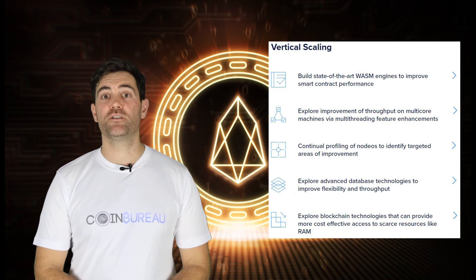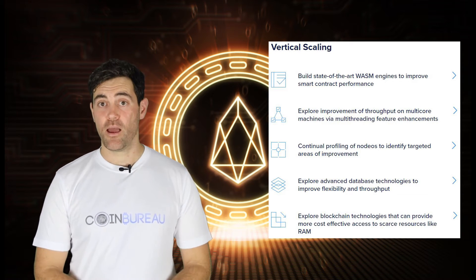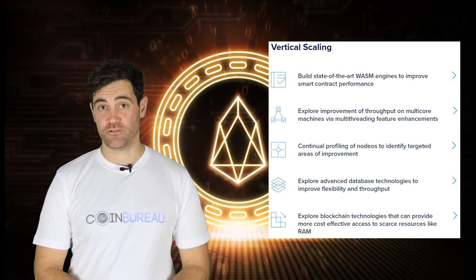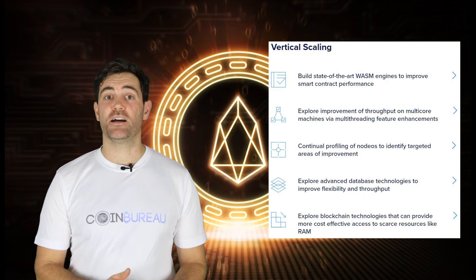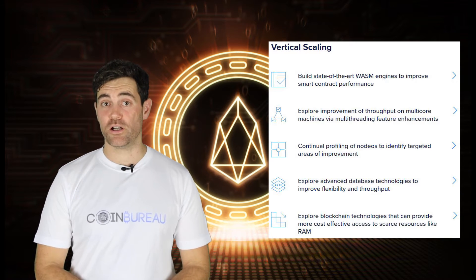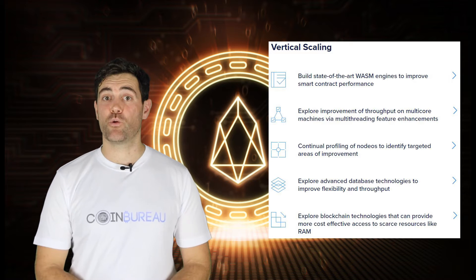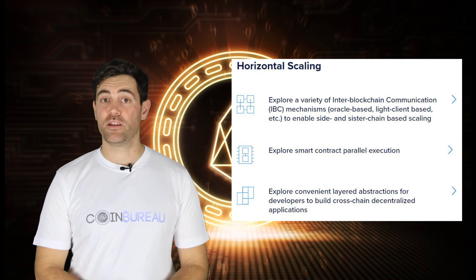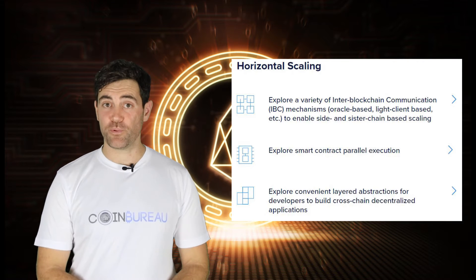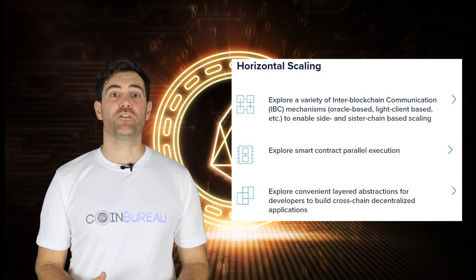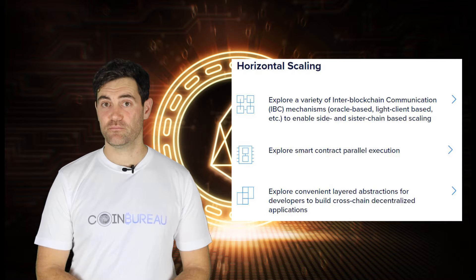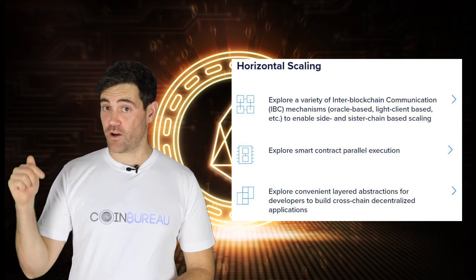Vertically, the project will focus on technologies such as updated web assembly, multithreading, node improvement, advanced databases, and resource reduction. Driving its scalability is the desire to fine-tune and optimize throughput on the network while simultaneously reducing the resource load required to process transactions. Horizontally, EOS targets improving communication protocols while exploring multiple options that allow applications to talk across several blockchains. The effort to create a scalable, efficient, and stable blockchain is an ongoing effort with the EOS project.